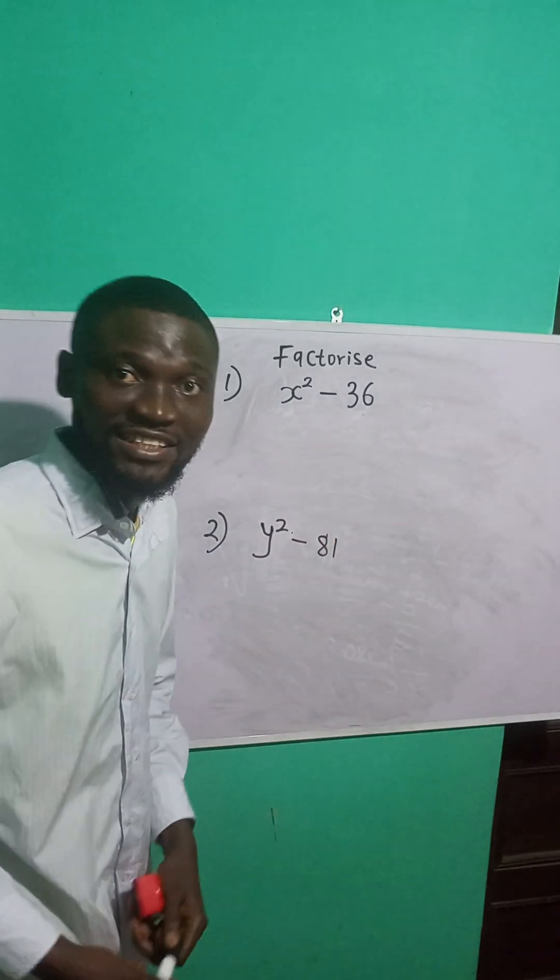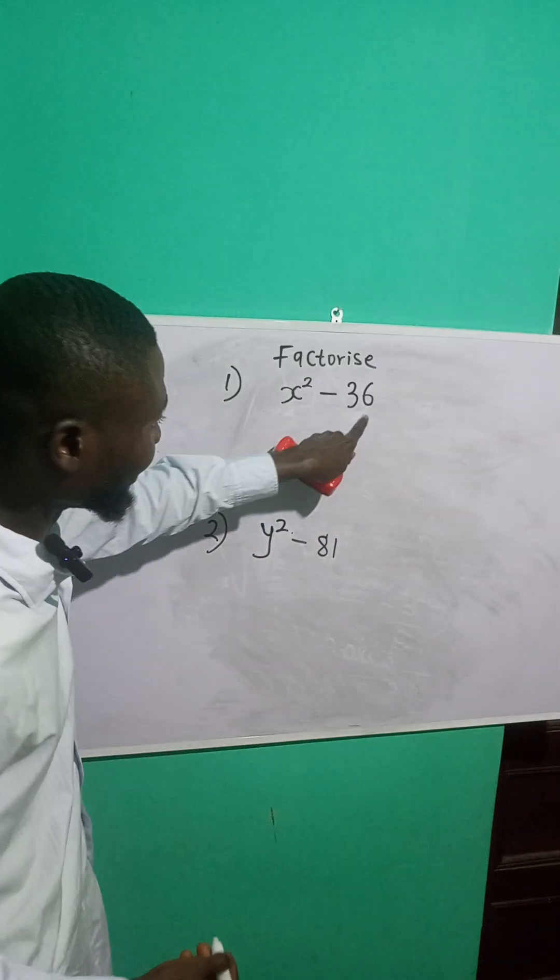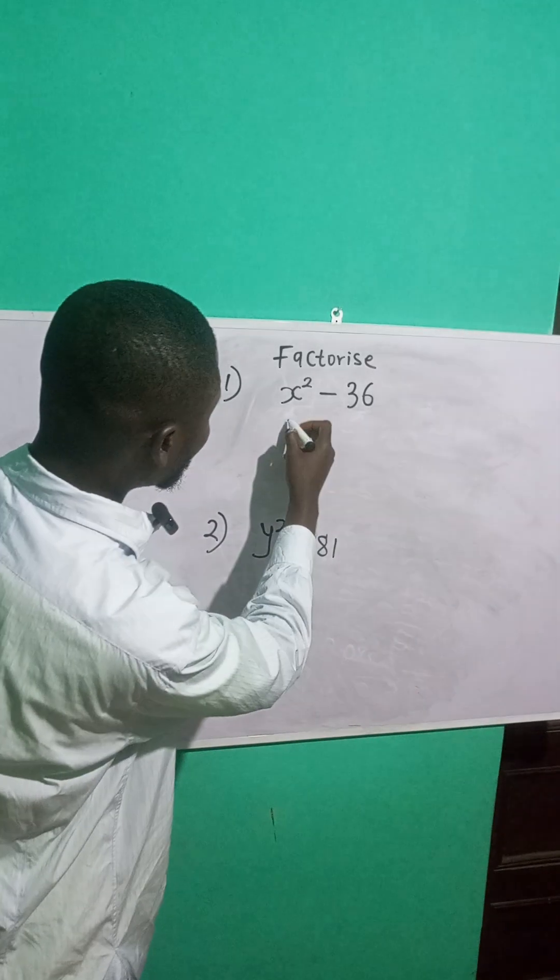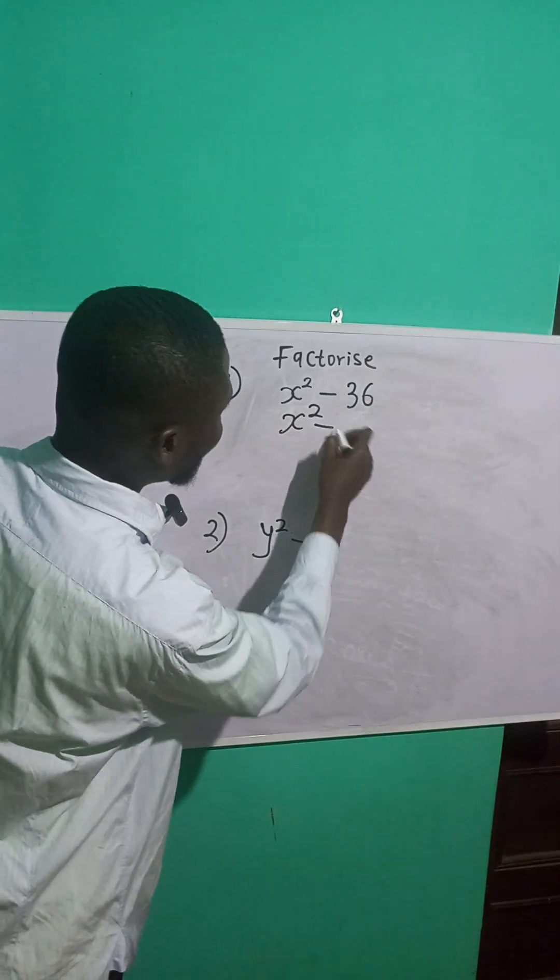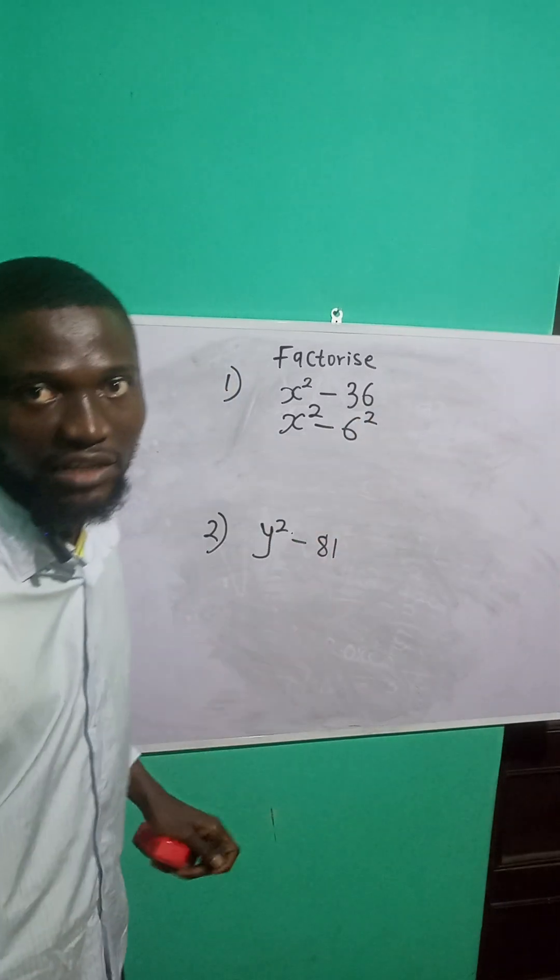So when you see this kind of function, the first thing that should come to your mind is difference of two squares. Because here is square, and this can be written as what? C square, right? So this is x raised to power 2 minus what? C raised to power 2. Because C raised to power 2 will give it a C, right?